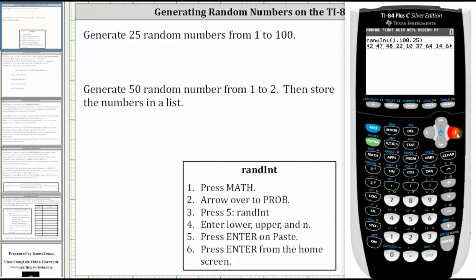It can sometimes be difficult to view all the random numbers from the home screen. And that's why for the second example, we will also store the random numbers in a list.